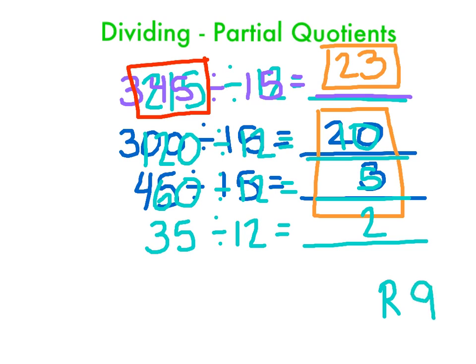And then we're going to add up these numbers right here to get our whole number. So 10 plus 5 is 15, plus 2 is 17.